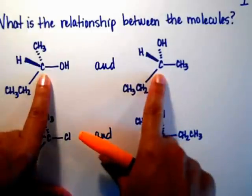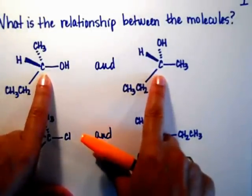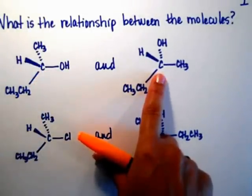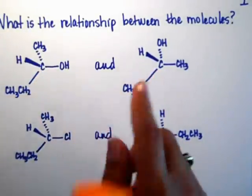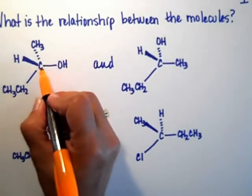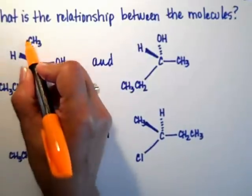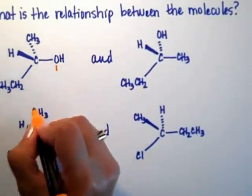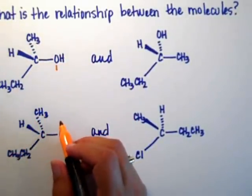They have one chiral center, so what I'm going to do now is assign R or S. So I'm going to assign the absolute stereochemistry. Oxygen, carbon, carbon, hydrogen. Oxygen has higher atomic number, so it gets number one.